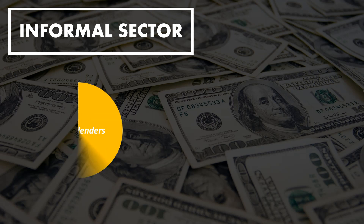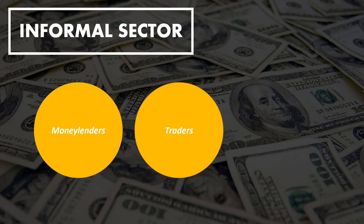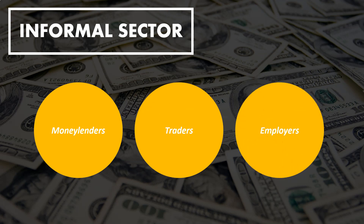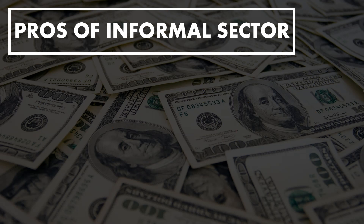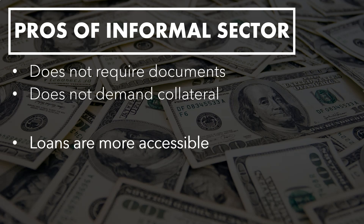Now let's look at the informal sector. There are several scattered, unauthorized sources of credit in the informal sector: money lenders, large agricultural traders, employers, friends, and even family. The pros of the informal sector include no requirement for formal documents or collateral, and loans are more accessible since banks are often inaccessible, especially in rural areas where most people don't even have a bank account. Although this has been minimized through the Jan Dhan Yojana scheme, lack of bank accounts is still widespread across rural India.